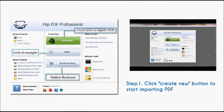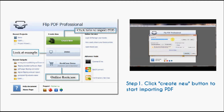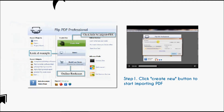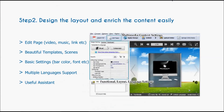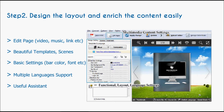Step 1: Click Create New to import a PDF file to Flip PDF Professional. Step 2: Design the layout with templates, functional settings and enrich with multimedia content.